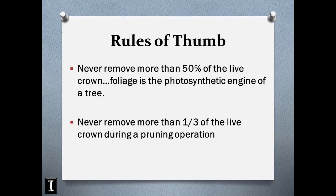General rules of thumb when pruning: never remove more than 50% of the live crown of a tree, because that crown and those leaves are the photosynthetic engine of the plant. Never remove more than one-third of the live crown during any single pruning event. If you reduce a tree's crown by over 50% and a drought occurs that summer, the tree is going to struggle — and that was your poor decision-making.